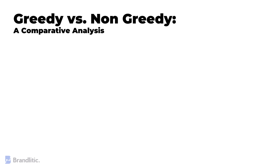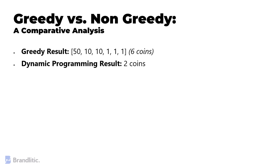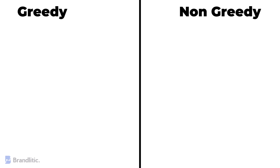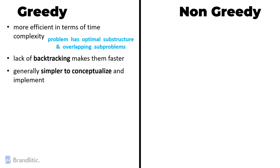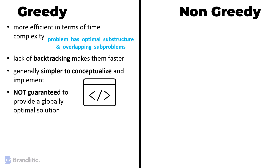Let's look into a comparative analysis of greedy versus non-greedy approaches. In our example, the greedy result was 6 coins — 50, 10, 10, 1, 1, 1 — while the dynamic programming result was 2 coins — 50 and 25. Greedy algorithms are often more efficient in terms of time complexity, especially when the problem has optimal substructure and overlapping subproblems. The lack of backtracking makes them faster for certain scenarios. Greedy algorithms are generally simpler to conceptualize and implement, and while they do not guarantee a globally optimal solution, they often yield solutions that are close to optimal.